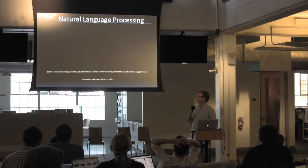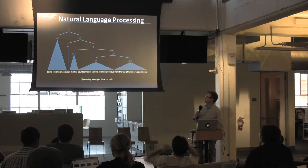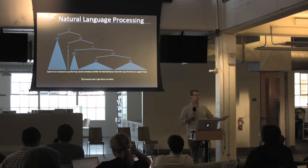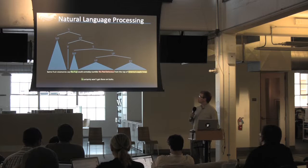One of the things we might want to do is identify all the noun phrases, and more generally analyze the entire syntactic structure. Another thing we might be interested in is what's called co-reference resolution. So if we see 'it certainly won't get their own looks,' we can identify that the Fuji apple is the referent of 'it.'